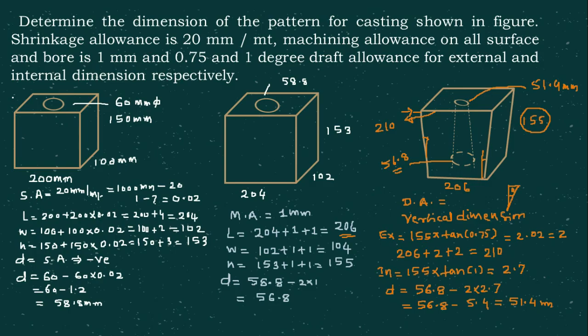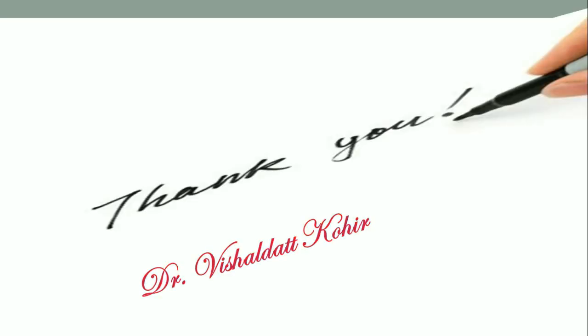Remember, the draft allowance for internal features is the reverse of the external one. So the final dimensions of the pattern are: top length 210 mm, bottom 206 mm, width 104 mm, height 155 mm, top bore diameter 51.4 mm, and bottom bore diameter 56.8 mm. This is how we calculate the dimensions of the pattern after considering shrinkage, machining, and draft allowance. Thank you for watching this video.